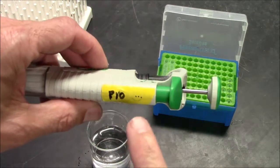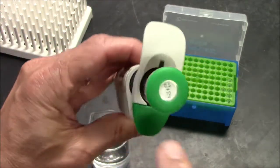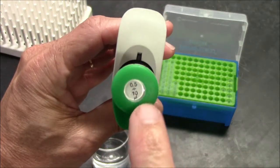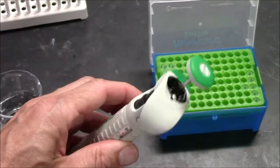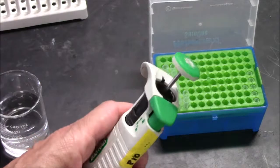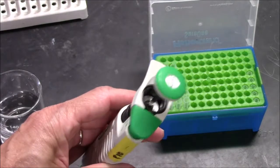Pipetting with a P10 is tricky. P10s go from a half microliter to 10 microliters, so very small volumes. I'm going to show you three or four common errors so that you can avoid these errors.